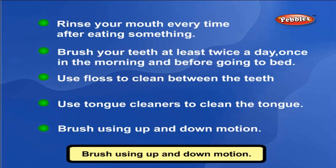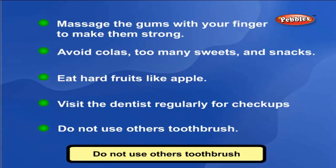Now, how do you take care of your teeth? Following are some of the ways to protect your teeth: Rinse your mouth every time after eating something. Brush your teeth at least twice a day — once in the morning and before going to bed. Use floss to clean between the teeth. Use tongue cleaners to clean the tongue. Brush using up and down motion. Avoid too many sweets and snacks. Eat hard fruits like apple. Visit the dentist regularly for checkups.